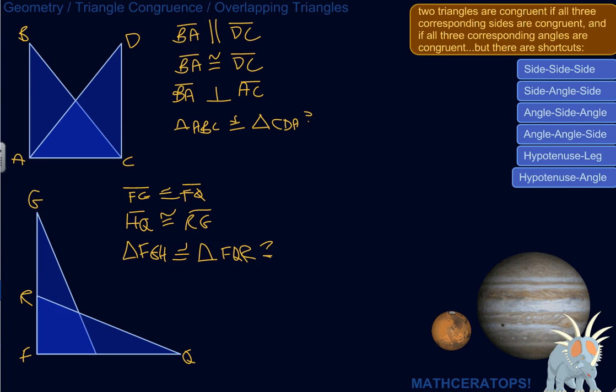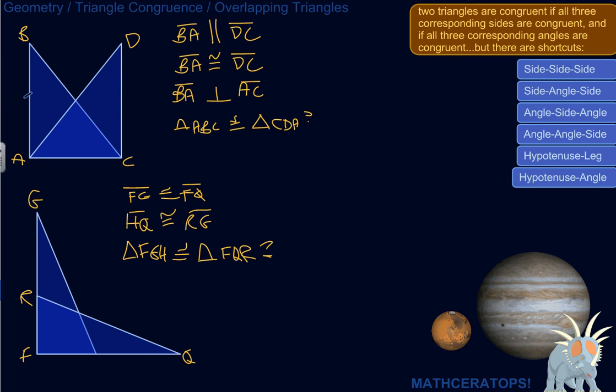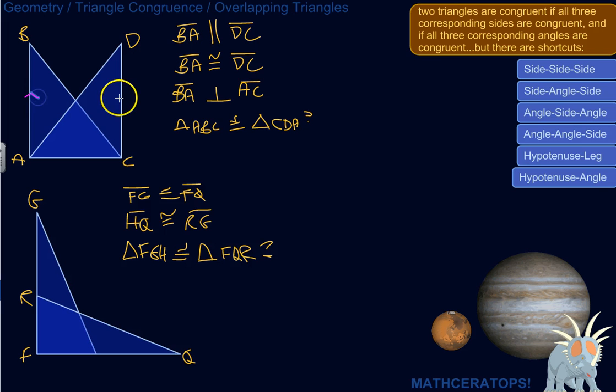So let's see what we know here. So BA is parallel to DC. Okay, so maybe you just mark that. BA is congruent with DC. Okay, so they're also congruent. I'm just going to mark these congruence marks. BA is perpendicular to AC, so this forms a 90 degree angle. And because these two lines are parallel, then this must also be a 90 degree angle.